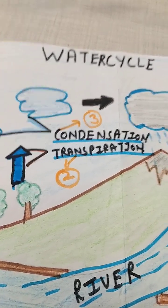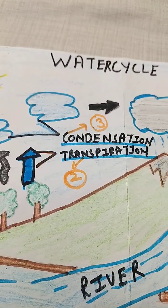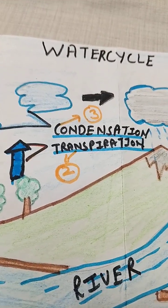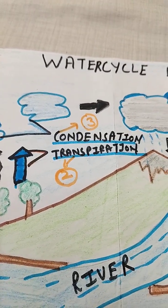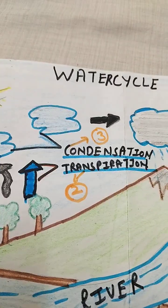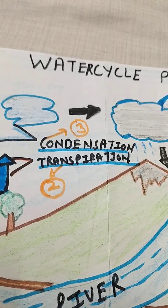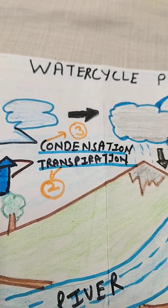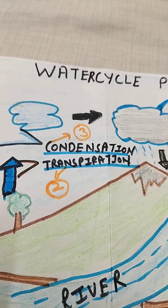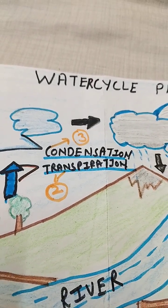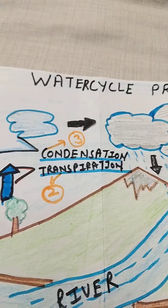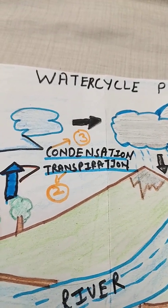To summarize: the first step is evaporation, and the second step is transpiration — the process where plants release water vapor into the atmosphere through small pores on their leaves called stomata.